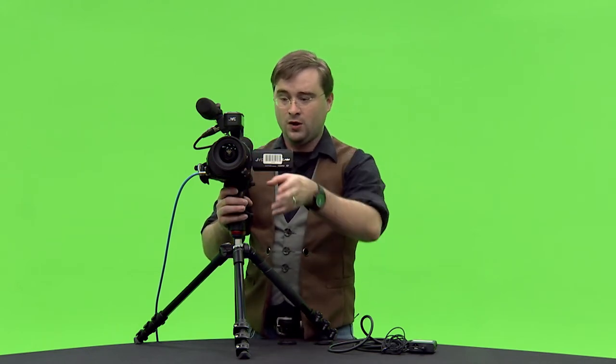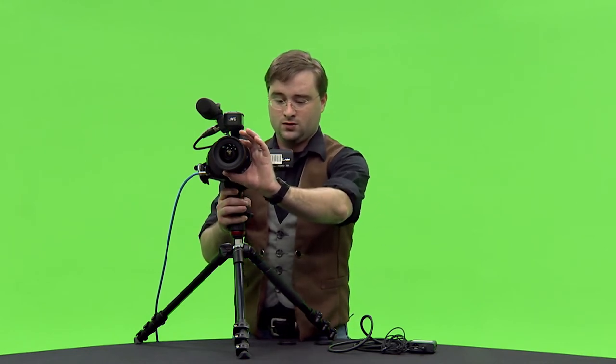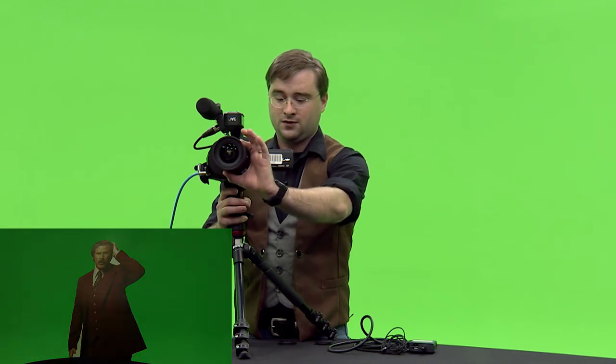Once you've adjusted your shutter speed there's a couple other things that you can work with to change the amount of light coming in. One is your iris. Now on most lenses the iris is going to be the closest ring to the body of the camera. Go ahead and turn it to your left to let light in. Turn it to your right to darken the image up a little bit.